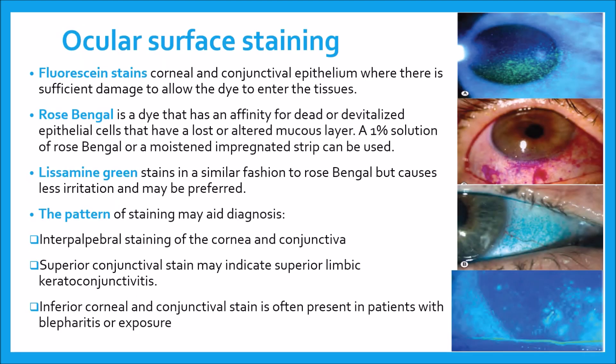Then comes ocular surface staining. The first is fluorescein stain. Corneal and conjunctival epithelium, where there is sufficient damage to allow the dye to enter the tissues, stains as shown in the figure. You can see punctate epithelial erosions here in the cobalt blue filter. In the first picture there is mainly corneal staining.